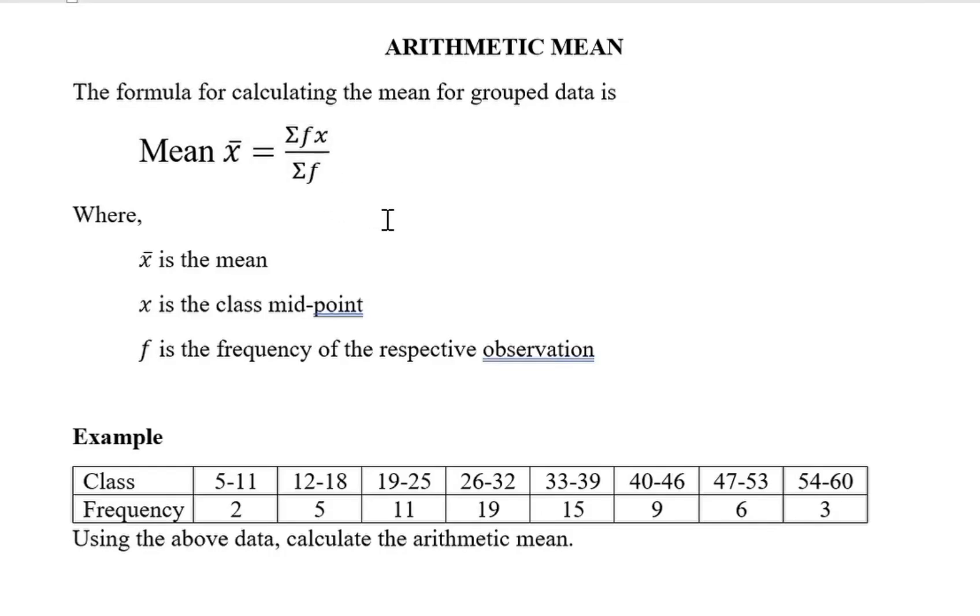The arithmetic mean for grouped data is calculated as x bar equals summation fx over summation f, where x bar is the arithmetic mean, x refers to the class midpoint, f is the frequency of the respective observations.